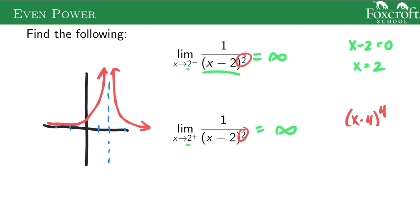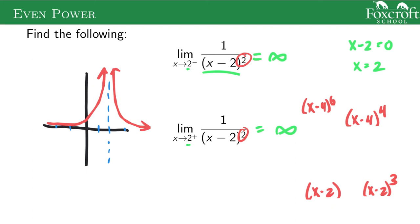Any even power — whether it's squared, to the 4th, to the 6th — they're going to go in the same direction. Odd powers, like x minus 2 by itself or x minus 2 cubed, behave like the first slide: they go in opposite directions. Once you realize there's an asymptote, you basically have a 50-50 shot — it's either positive or negative infinity — and you just have to reason through which one it should be.